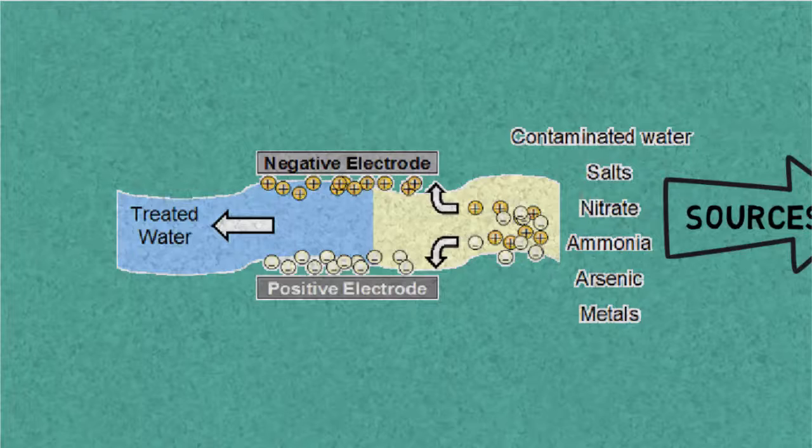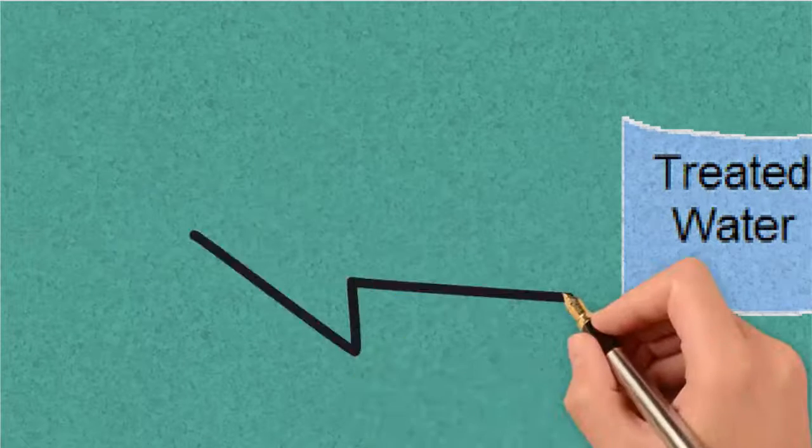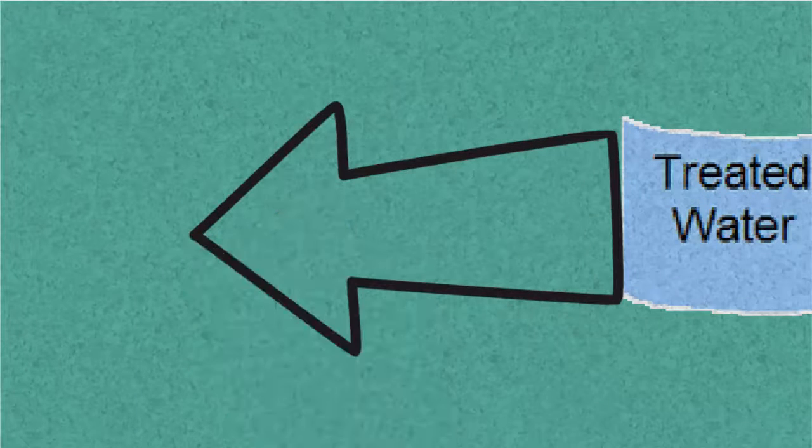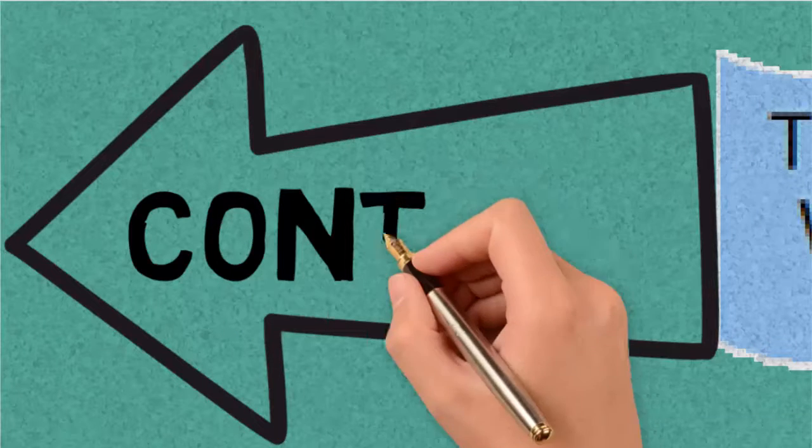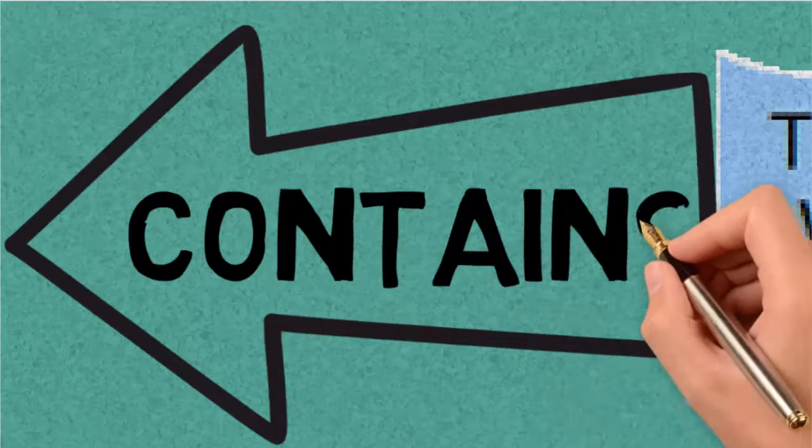The overall dissolved impurities that are now present in the water is called the total dissolved solids or simply TDS. TDS can be expressed in mg per liter or parts per million (ppm).